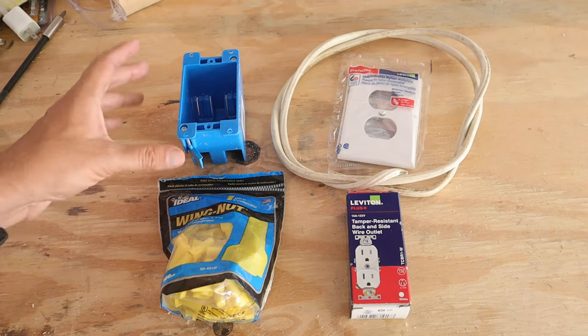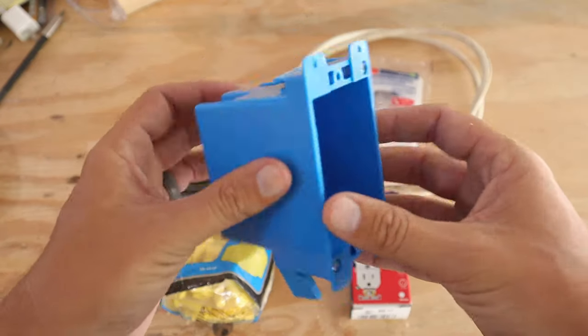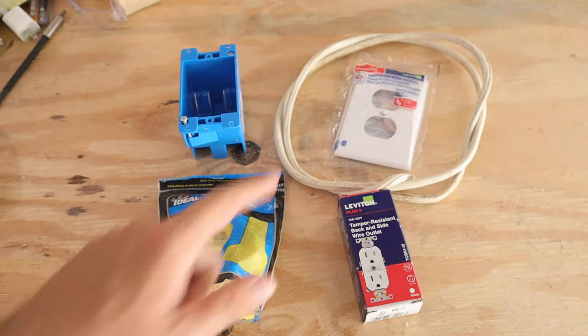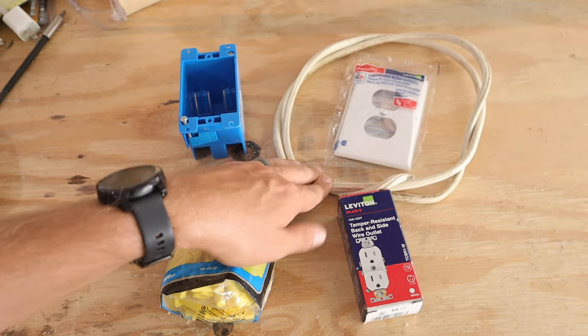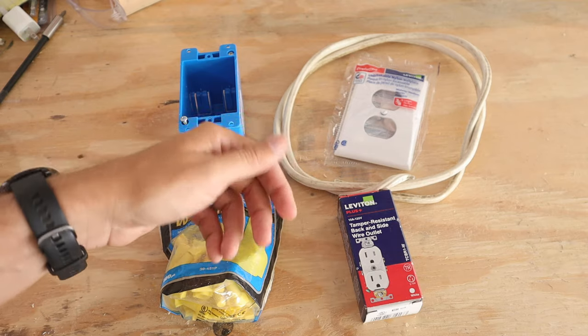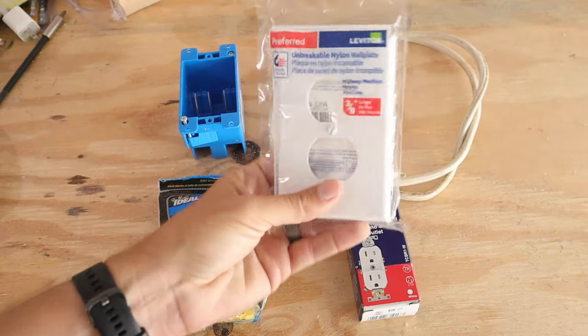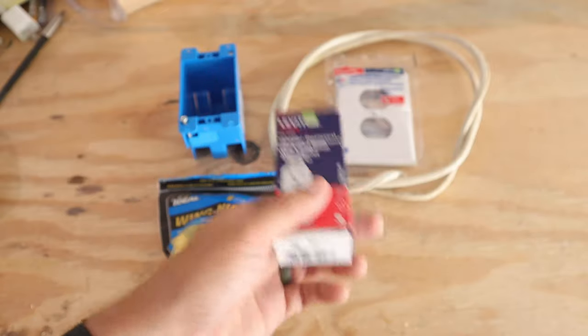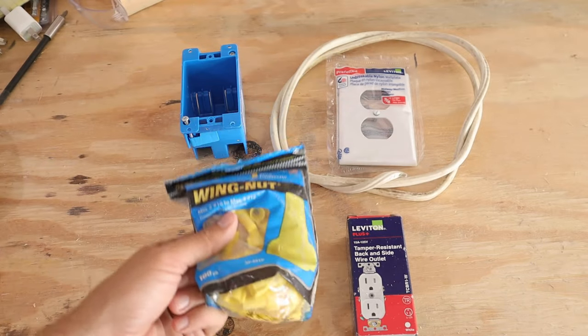These are all the items we're gonna need for this installation today. We've got our old work box, wiring - depending on your circuit depends on what size wiring you need. This for me is 14.2, it's a 15 amp circuit so I'm putting 14 gauge wire in. If you're doing a 20 amp circuit you'd probably want to install 12 or 10 gauge wire. We've got a plate for the outlet, a tamper-resistant outlet to install, and of course our wire nuts for bringing all those wires together.